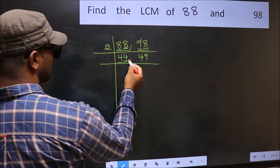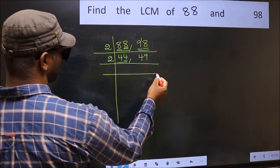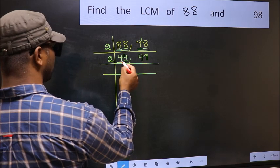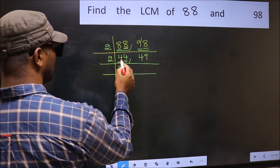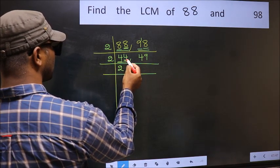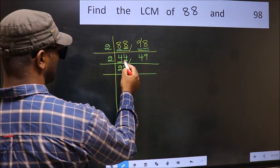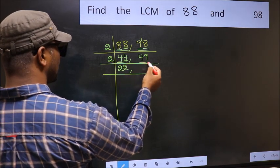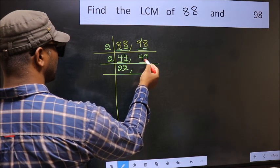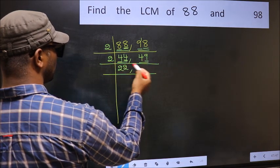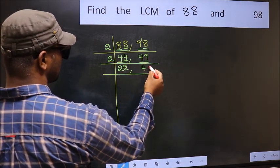Now we have 44. Last digit 4 — it's even, so take 2. First number 4: when do we get 4 in the 2 table? 2 twos are 4. The other number 4: 2 twos are 4. The other number 49 — last digit 9, not even, so 49 is not divisible by 2. Write it down as it is.